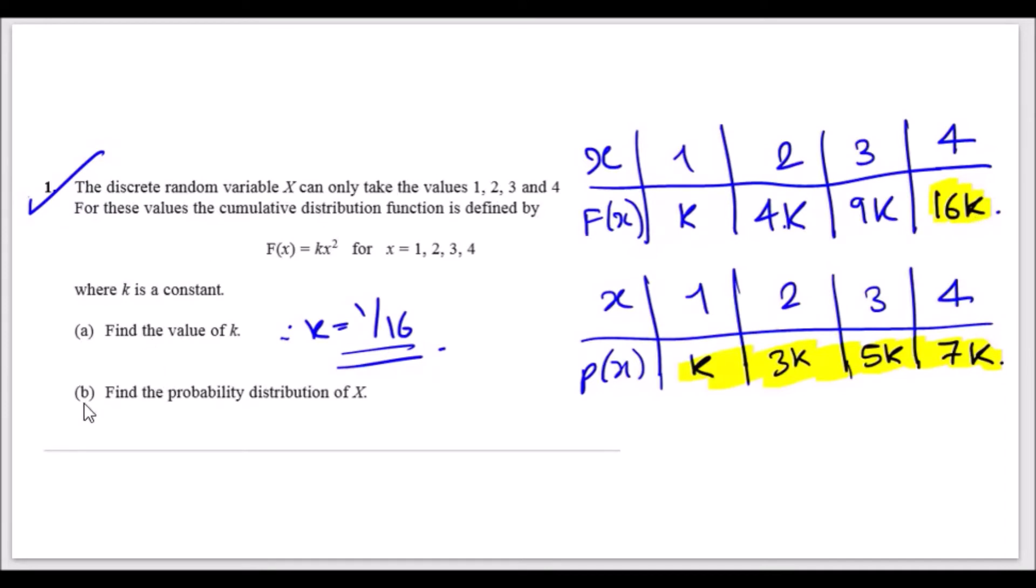Now for the next question, I had to find the probability distribution of X. To do this, lay down your x values from 1, 2, 3, and 4, and now we just need to think about it relative to the cumulative distribution.